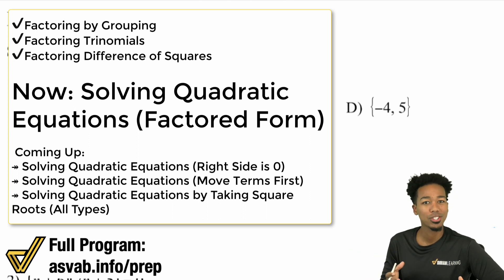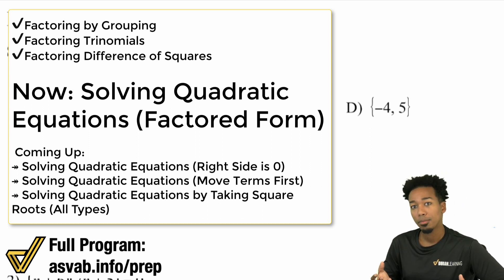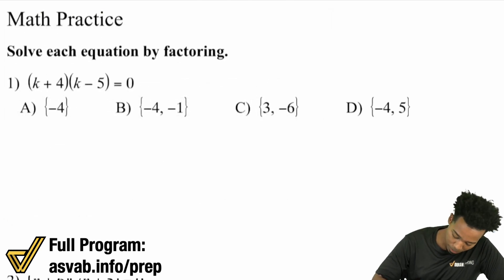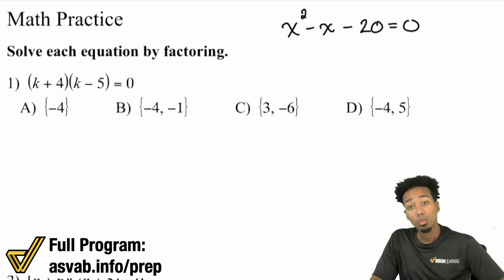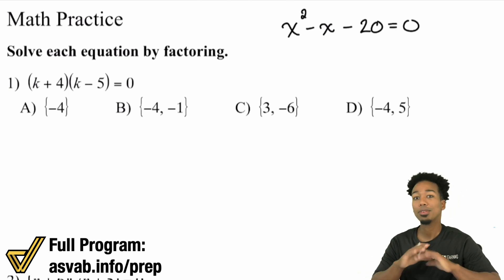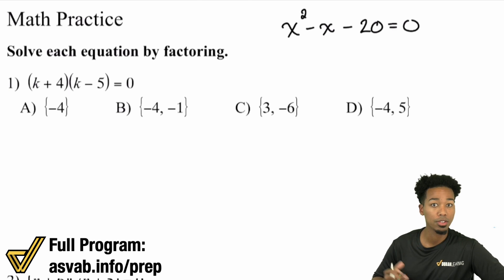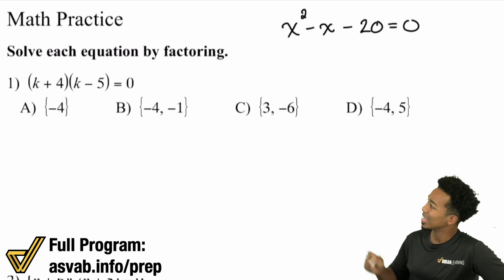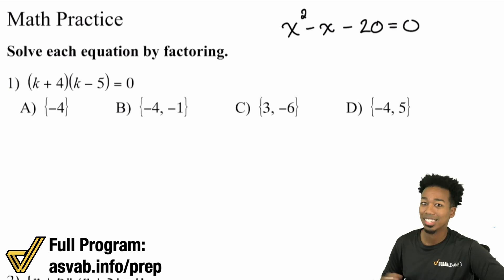Then you're going to go ahead and practice this with those worksheets and speed drills. But after this, you're going to go ahead and learn really how to bring it all together. Because solving quadratic equations — equations like x squared minus x minus 20 equals zero — if you want to solve something like this, you need to learn how to factor trinomials first. And that's something that we've definitely covered already. If you're in the course or program, just go back a couple of activities and you'll see factoring trinomials in there. That's something you're going to need to learn how to do, because that's how we're going to get to this point right here where we can actually solve things pretty easily once it's in this form.